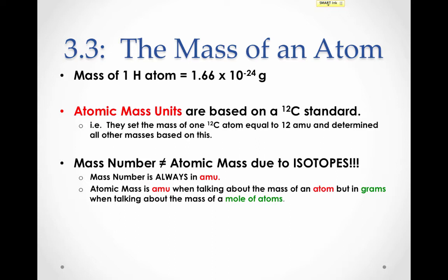When we talk about mass number, we always talk about it in AMUs. It's the number of protons plus the number of neutrons. Since protons have a mass of one AMU and neutrons have a mass of one AMU, added together you get the mass of the atom in AMUs.